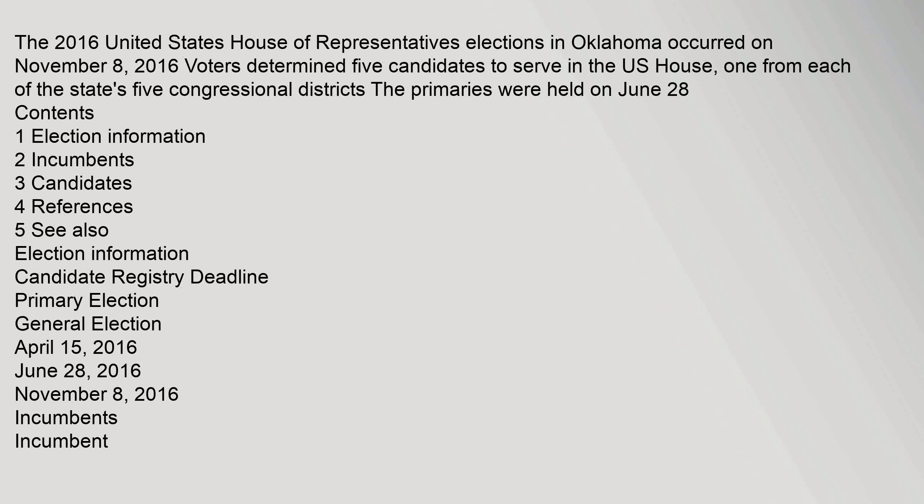The 2016 United States House of Representatives elections in Oklahoma occurred on November 8, 2016. Voters determined five candidates to serve in the U.S. House, one from each of the state's five congressional districts. The primaries were held on June 28.